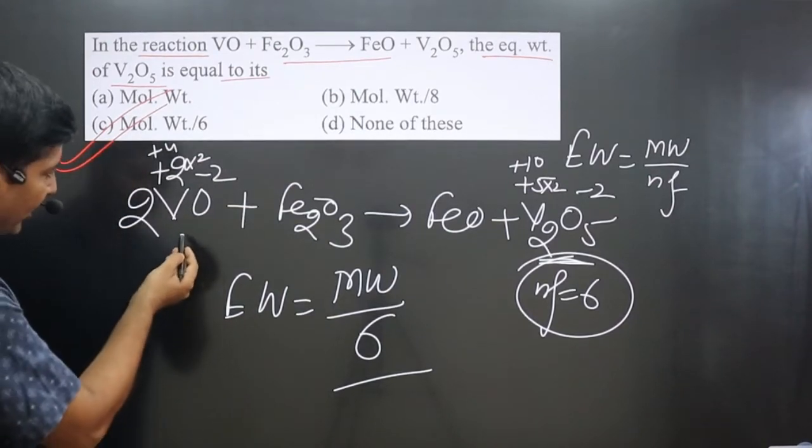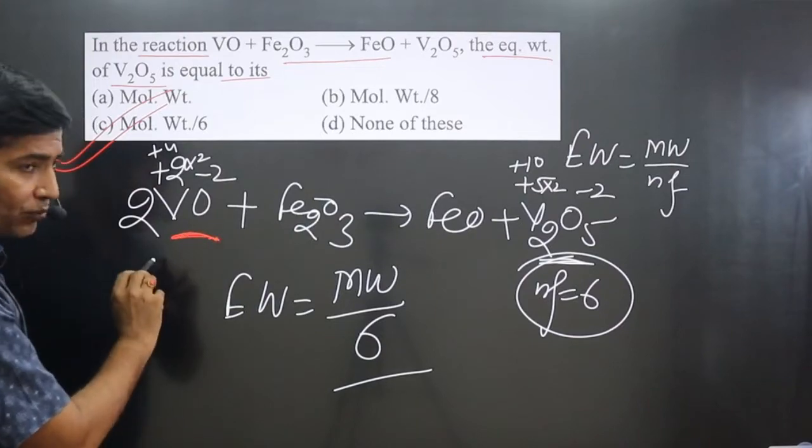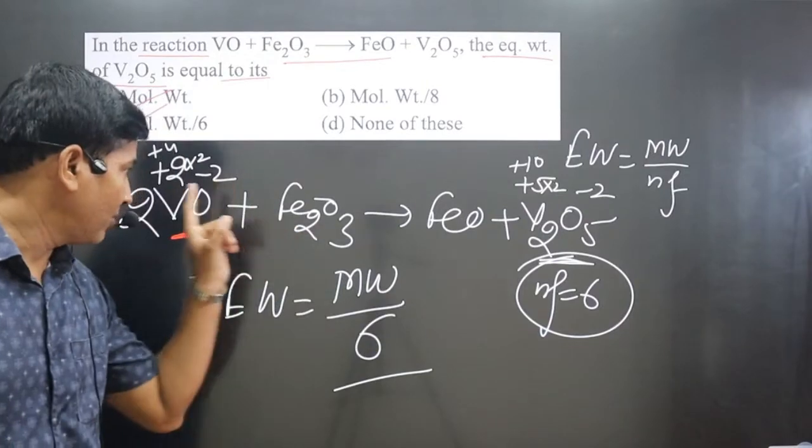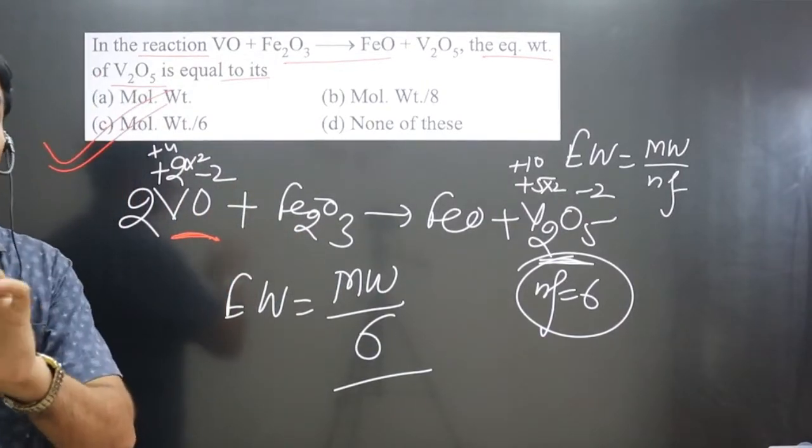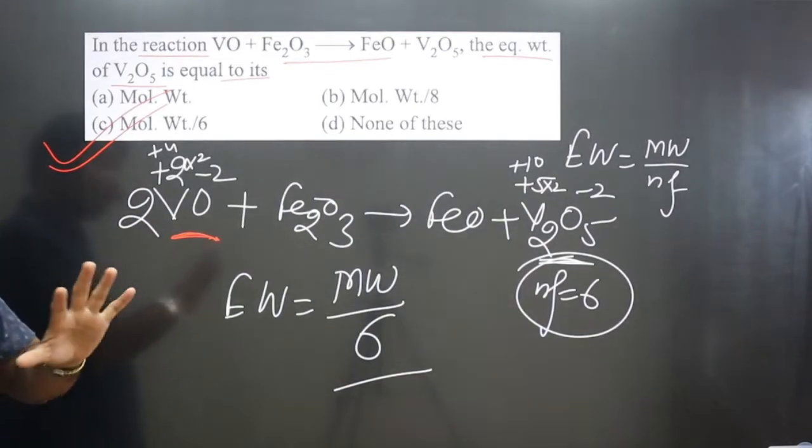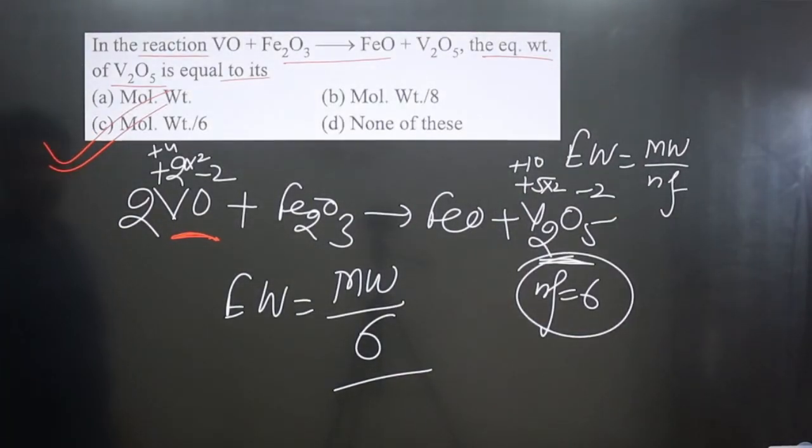Keep in mind, if I calculate equivalent weight, in this case two vanadium has n factor value of six, so one vanadium n factor value will be three. Half of that, so in this case molecular weight divided by three would be the answer. We got option C.